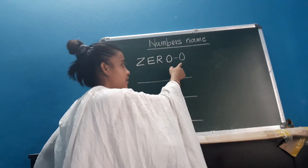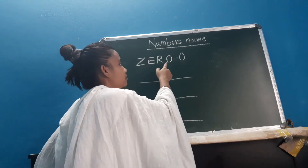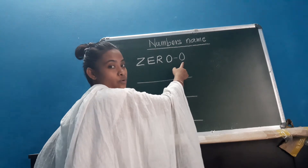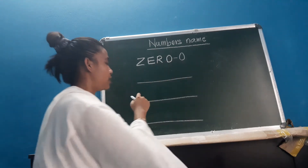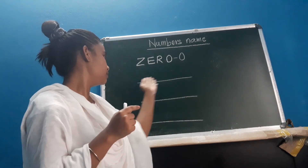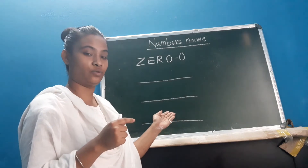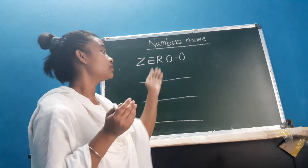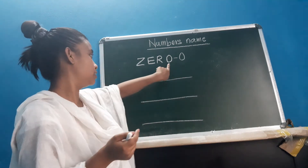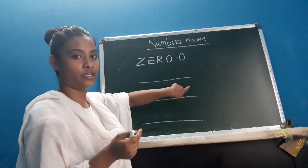Okay. So as you can see here there is a blank space. You have to fill these blanks. And what you have to write? The spelling of 0 — this one. This you have to write here.